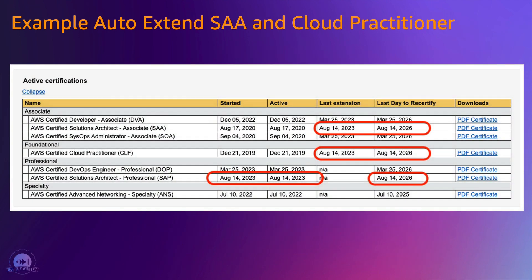Here's an example of what that looks like in the certification portal. You can see that I passed my architecture professional on August 14th, the last day to recertify is now in 2026, and you can see that it pushed those extensions into my solutions architect associate and also my cloud practitioner.